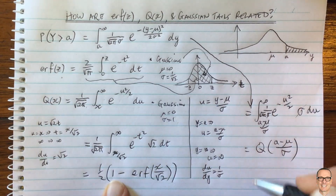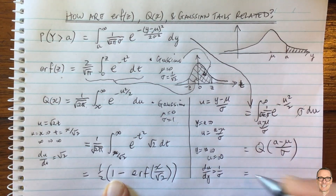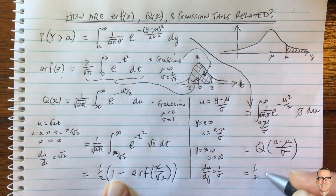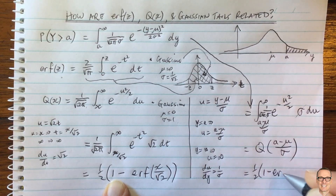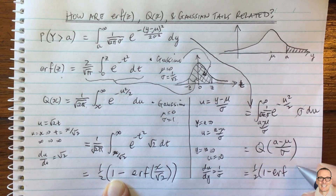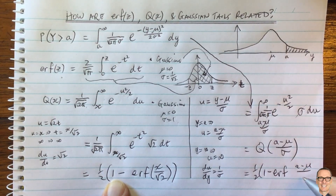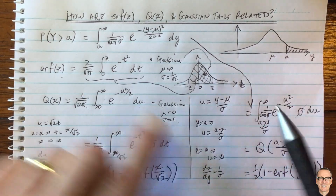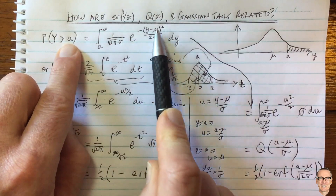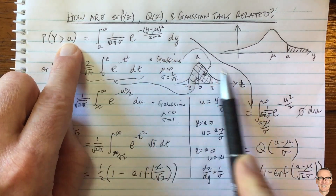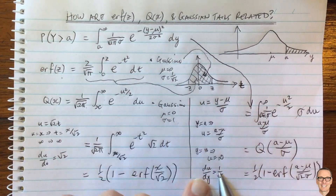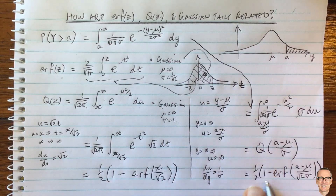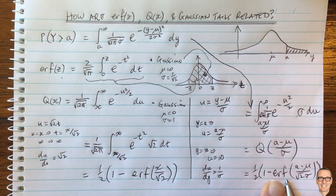And we can relate this also to the error function, which is one half of 1 minus the error function evaluated at a minus mu divided by the square root of 2 times sigma. So now we have an equation that takes the tail of a general Gaussian with mean mu and variance sigma squared, represents it in terms of the Q function by a simple change of variables, and represents it in terms of the error function, which we can calculate in standard programming languages such as C, Python, and MATLAB.